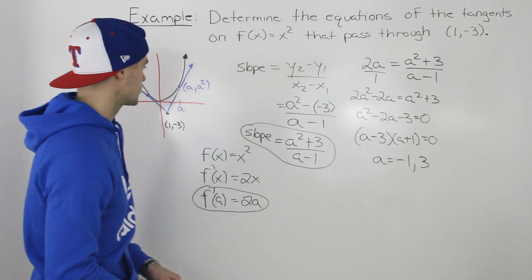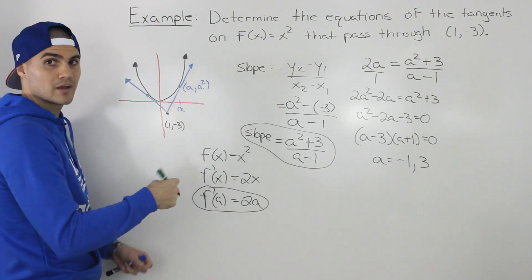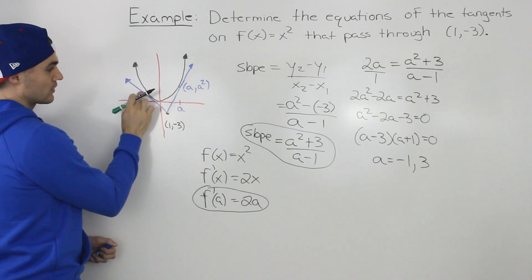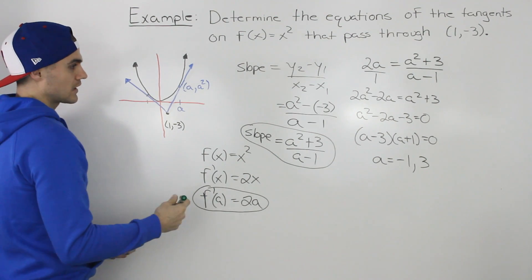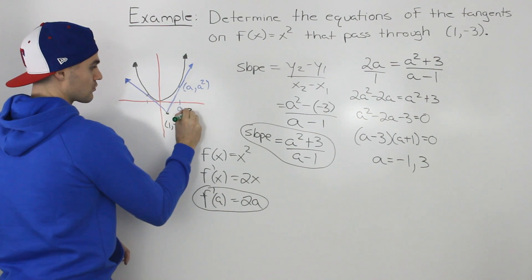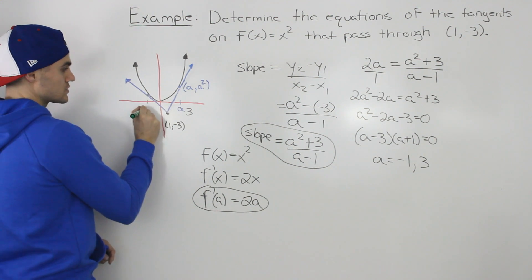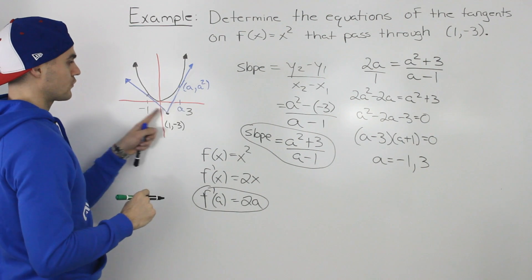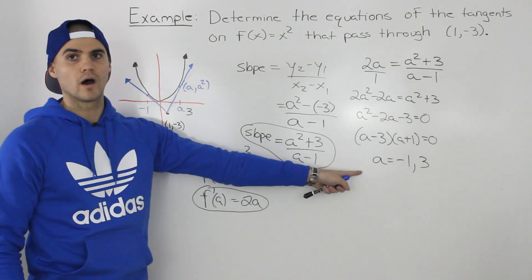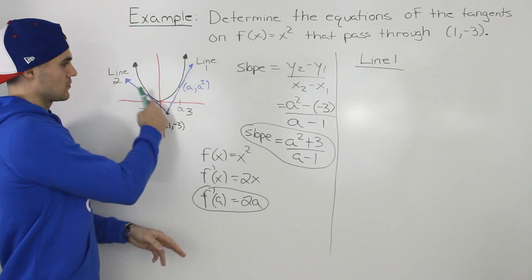Notice how we got two solutions when solving for the a value. The reason we got two solutions is that they give us the x value of the tangent contact point for both tangent lines. So we got a two-for-one deal: a = 3 is the x value of the contact point for one tangent, and a = -1 is the x value for the other. We solved for both x values in one step. Now that we have those x values, we can get the equations for both tangents.